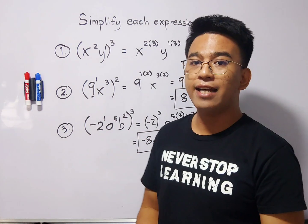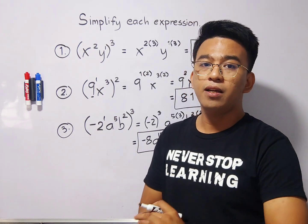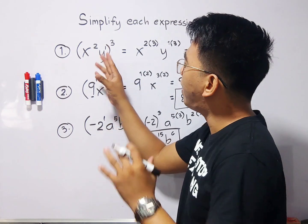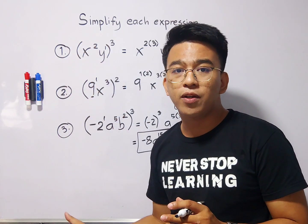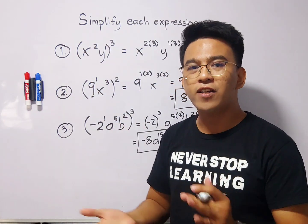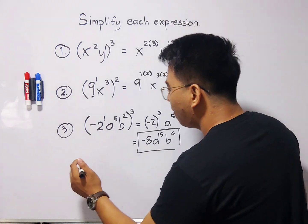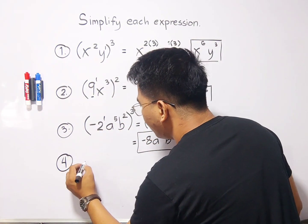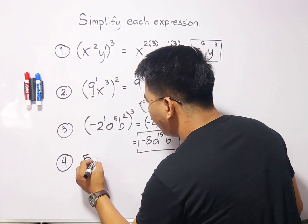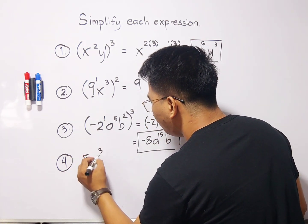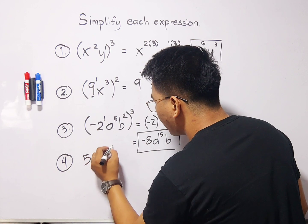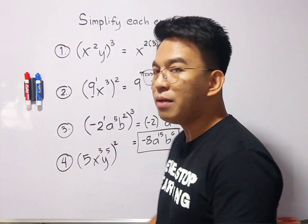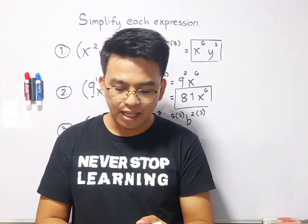I hope you learned something from this video on how to simplify expressions using laws of exponents. For your assignment: simplify (5x³y⁵)² raised to the 2nd power. I hope to see your answers in the comment section.